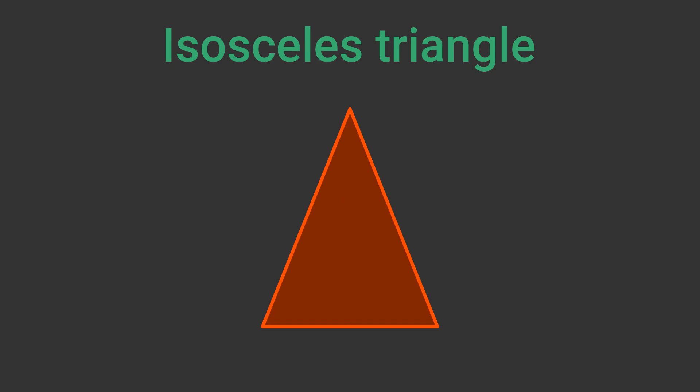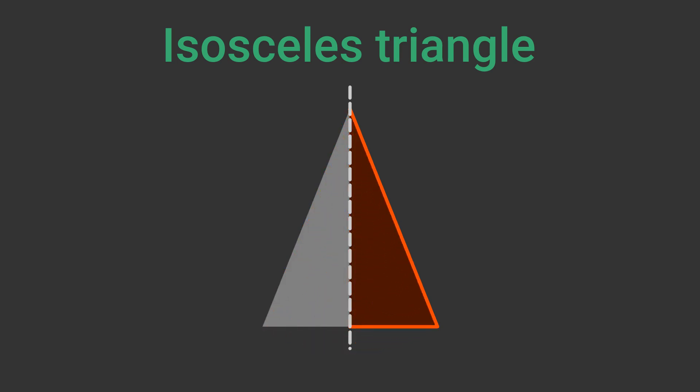Here is an isosceles triangle. It has one line of symmetry from the top vertex to the centre of the base. A line of symmetry is a line that divides the shape into two halves, where each half is an exact mirror image of the other. If we cut out a piece of paper in the shape of an isosceles triangle, we could fold it in half along the line of symmetry and the two halves would match up exactly.